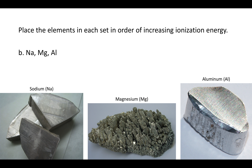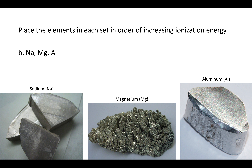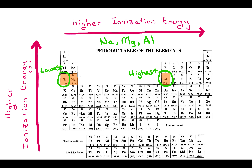What if you had sodium, magnesium, and aluminum, and you wanted to order those with increasing ionization energy? Sodium is here, followed by magnesium, and then aluminum. Because sodium is the furthest to the left, it has the lowest ionization energy. Because aluminum is the furthest to the right, it has the highest ionization energy. Listing them from lowest to highest: sodium, magnesium, and aluminum.